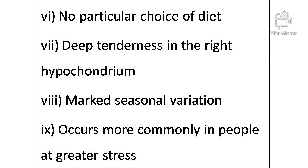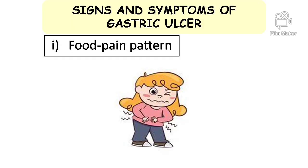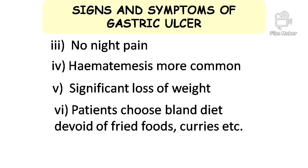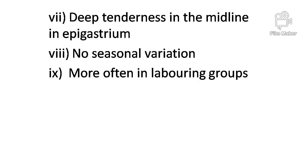Duodenal ulcer occurs more commonly in people at greater stress. Signs and symptoms of gastric ulcer: pain pattern, vomiting common, no night pain, hematemesis more common, significant loss of weight, patients choose bland diet devoid of fried foods and curries, deep tenderness in the midline in epigastrium, no seasonal variation, more often in laboring groups.